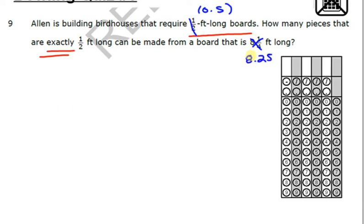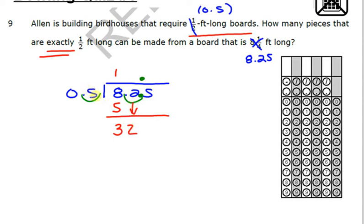Now, all I have to do is divide. So 0.5 divided by 8.25. Now remember, I cannot have a decimal on the outside, so I have to move it. And so this one gets moved as well, and I bring it up to the roof. However many times I move on the outside, I need to move on the inside. So let's go ahead and divide. 5 goes into 8 one time, which is 5. 8 minus 5 is 3, and I bring down the 2. 5 goes into 32 six times for 30, and 32 minus 30 is 2, and I bring down the 5. 5 goes into 25 five times evenly for a remainder of 0.